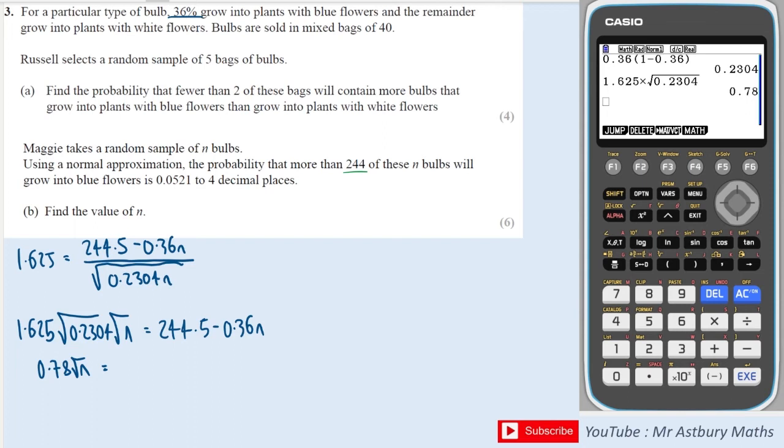That's equal to 244.5 minus 0.36n. I can move it all to one side to get 0.36n plus 0.78 n to the half minus 244.5 equals 0.